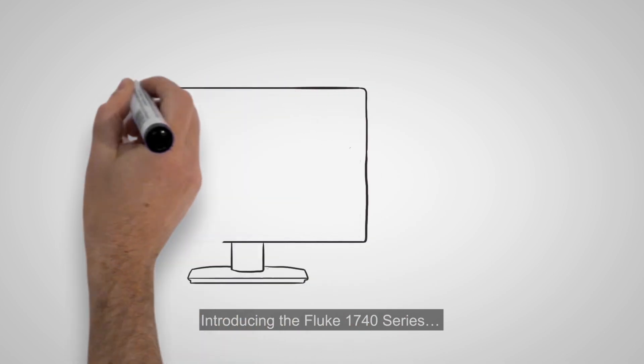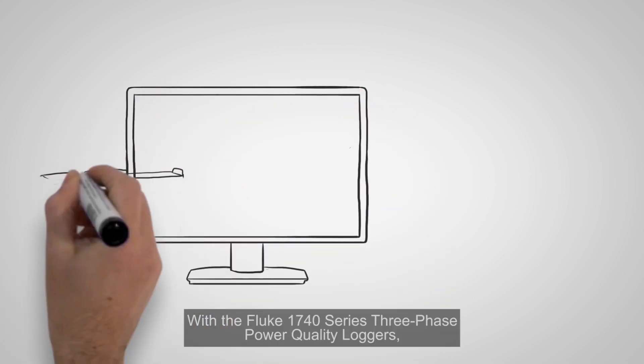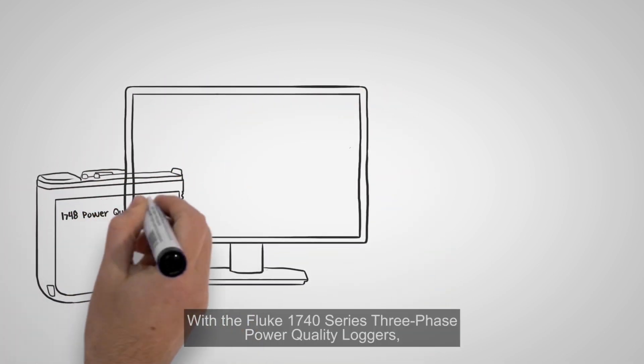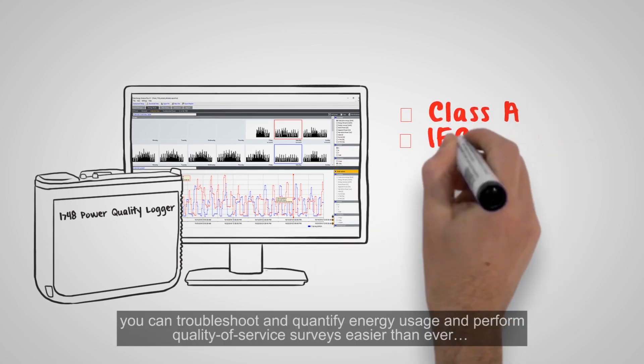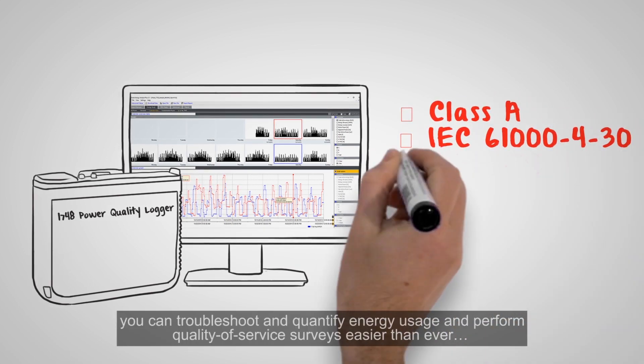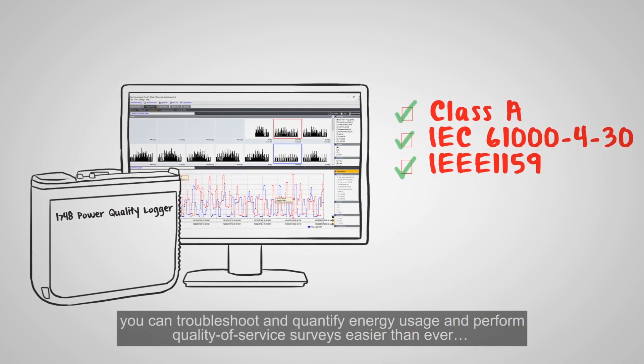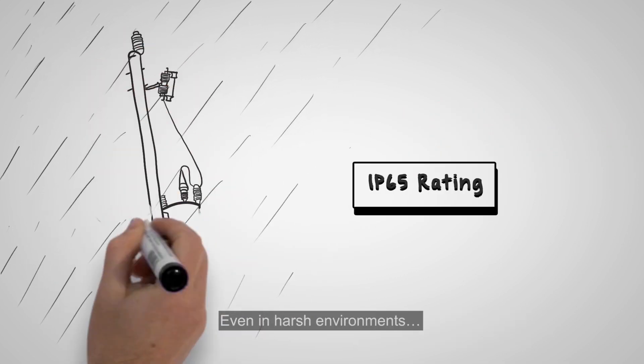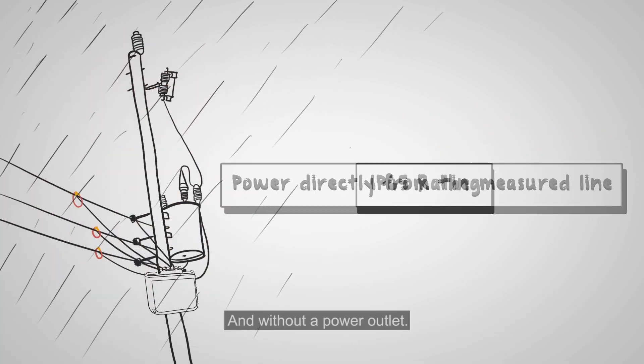Introducing the Fluke 1740 Series. With the Fluke 1740 Series three-phase power quality loggers, you can troubleshoot and quantify energy usage and perform quality of service surveys easier than ever, even in harsh environments and without a power outlet.